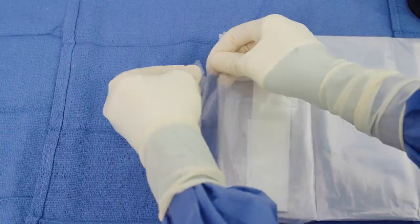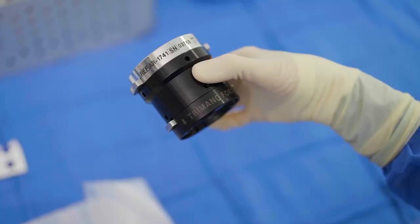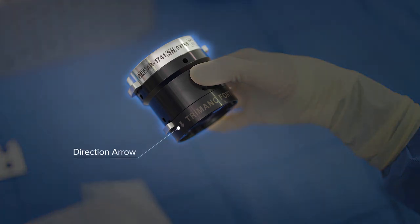Separate the closed side of the sterile sheath at the perforation. When aligning the terminal adapter, note that the direction arrow on the terminal adapter points down.